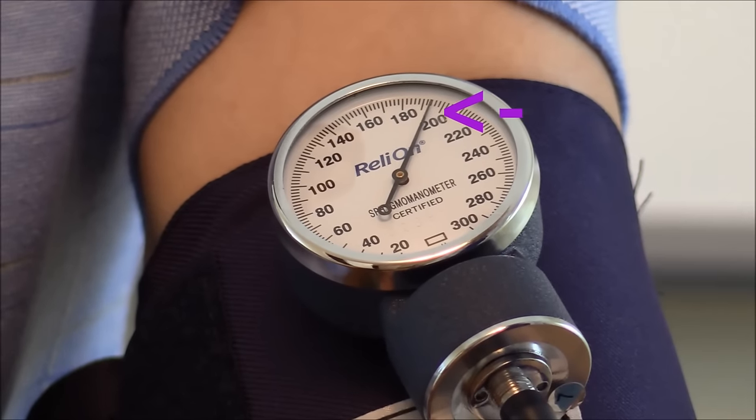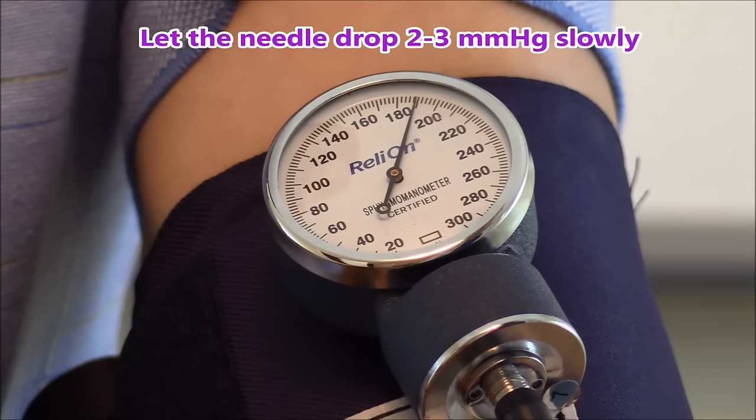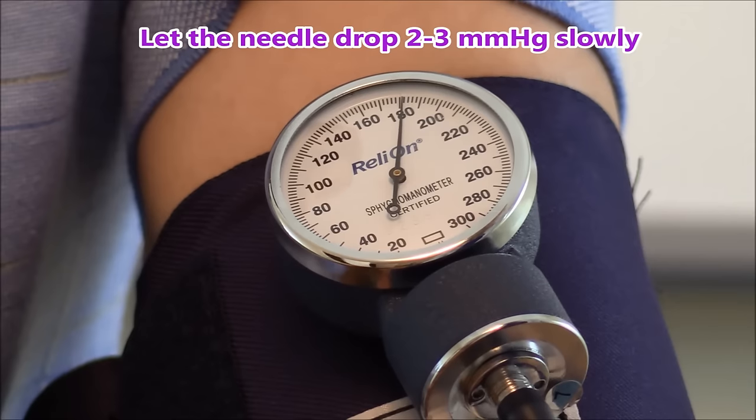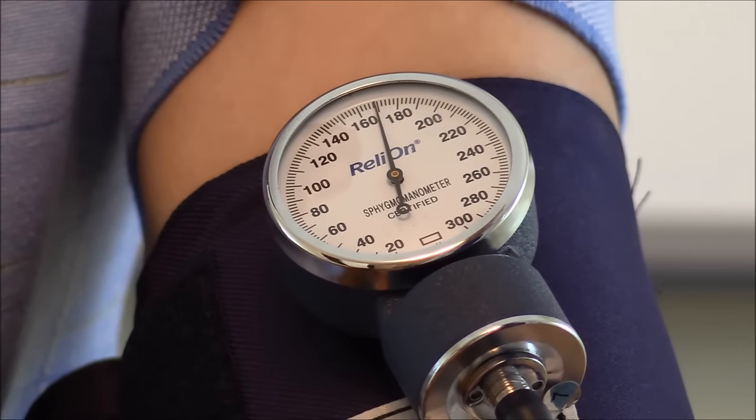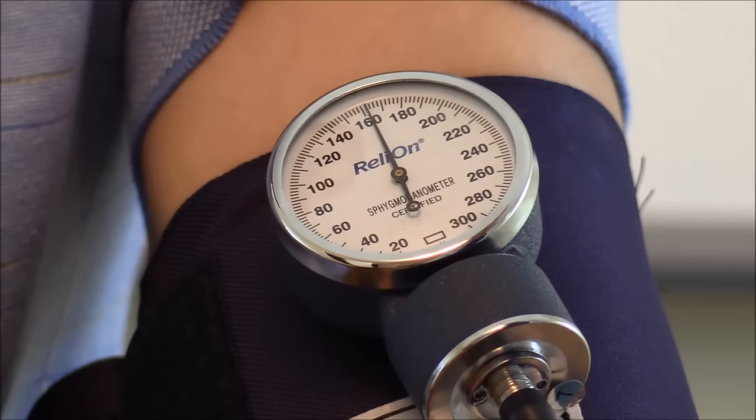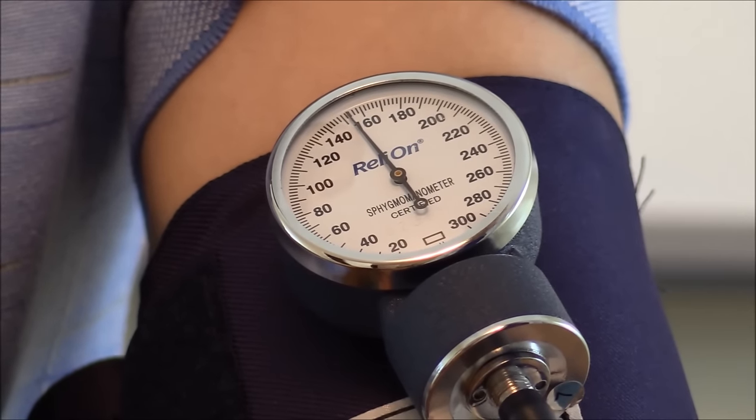Now we're going to let the needle drop about two to three millimeters of mercury slowly, not too fast not too slow, and we're listening for that first sound and that first sound will be our top number of our blood pressure which is our systolic. I haven't heard it yet and I'll let you know whenever I hear it.